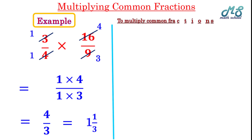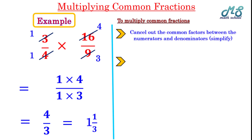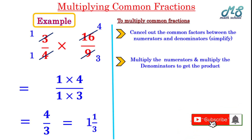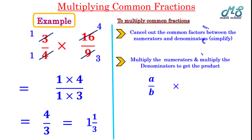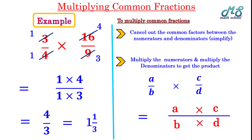The rule for multiplying common fractions: first, cancel out the common factors between the numerators and denominators to simplify. Second, multiply the numerators and multiply the denominators to get the final product. In other words, if we have a fraction a over b times c over d, we multiply the two numerators a times c over the two denominators b times d, written as ac over bd.